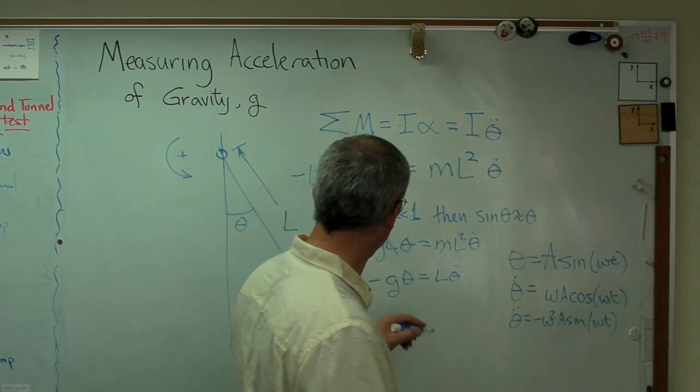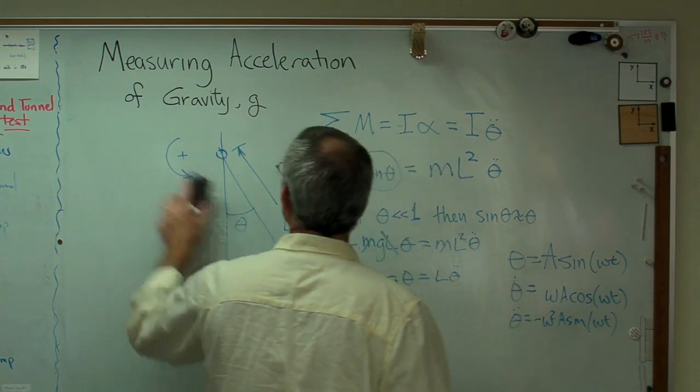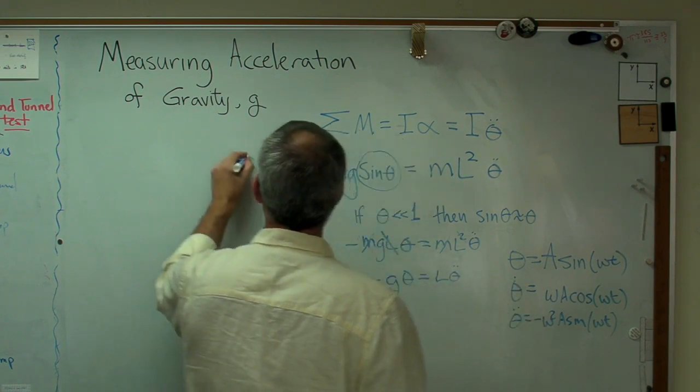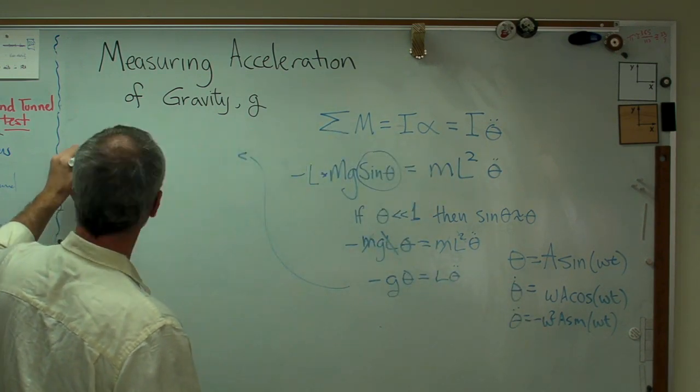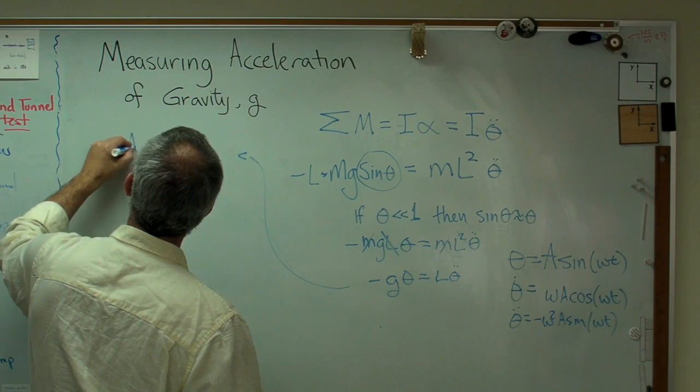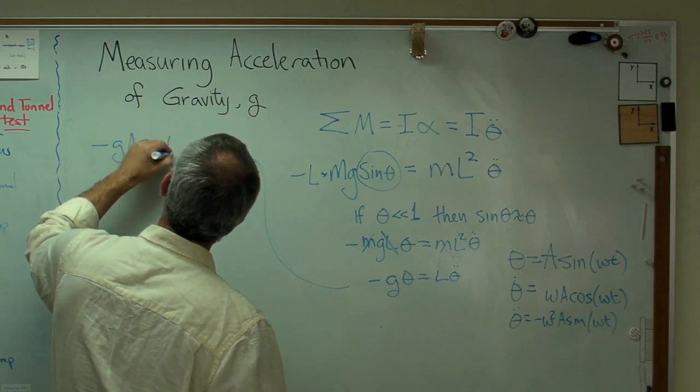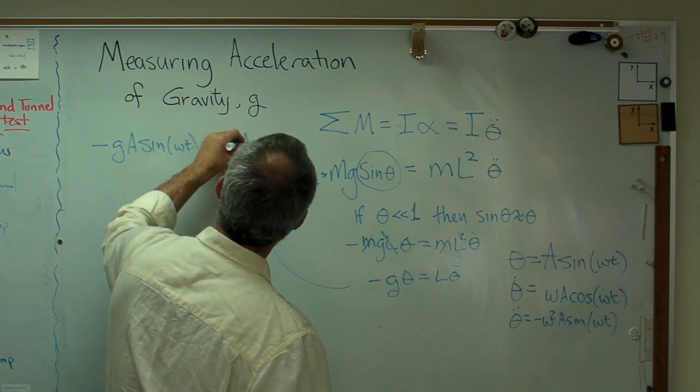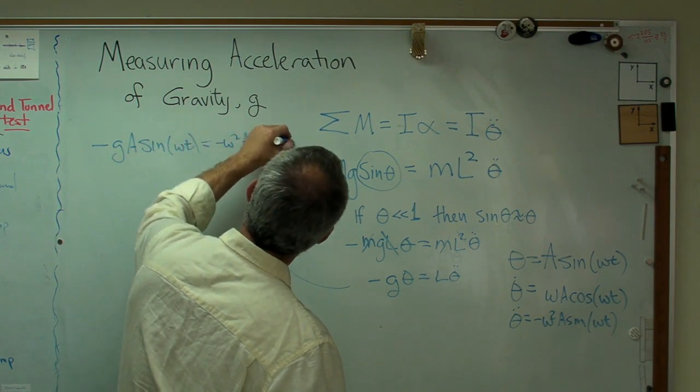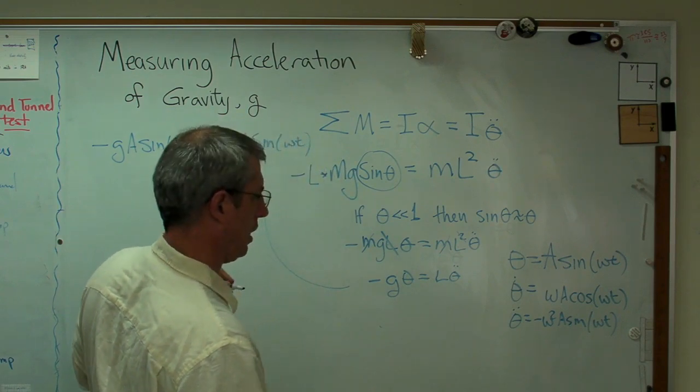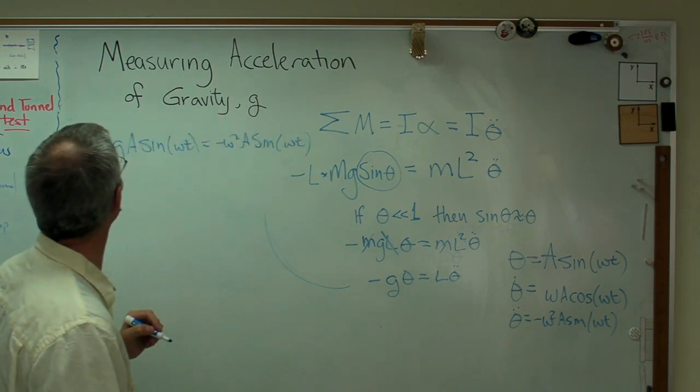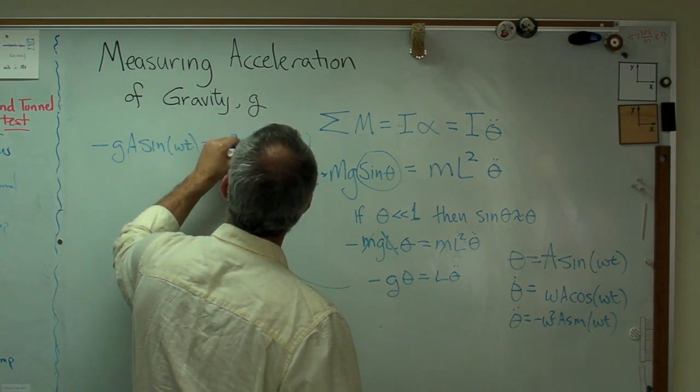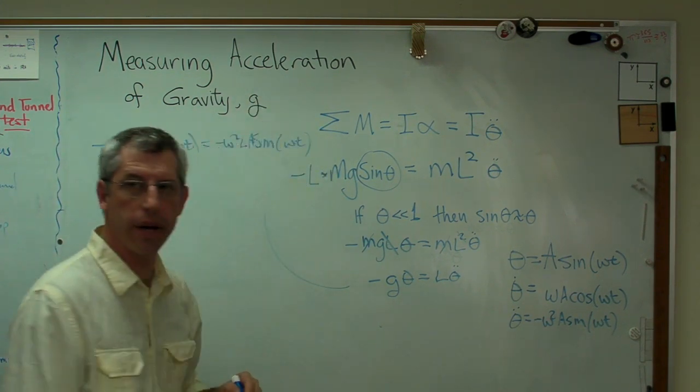So when I plug all that in here, I'm going to get, let me erase this. I'll make some more room for myself. Go back up here. Remember, my differential equation now is minus G A sine omega T equals minus omega squared L A sine omega T. There's an L in there somewhere. Omega squared L A. There we go. Now I got it.